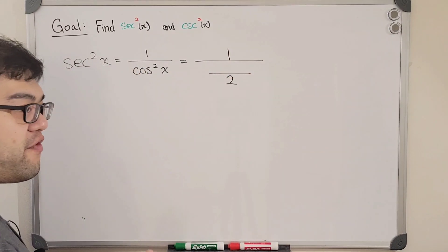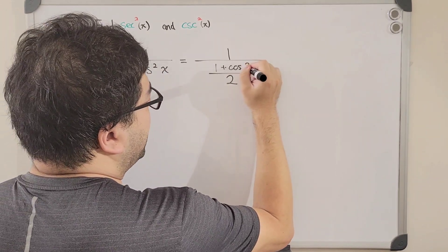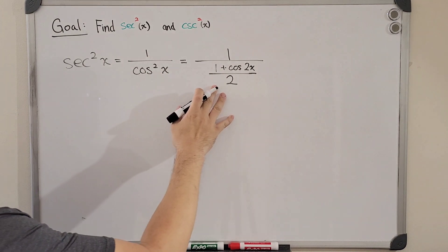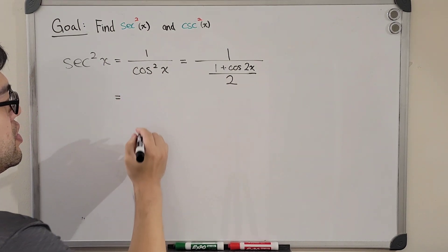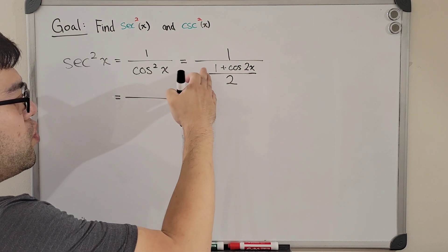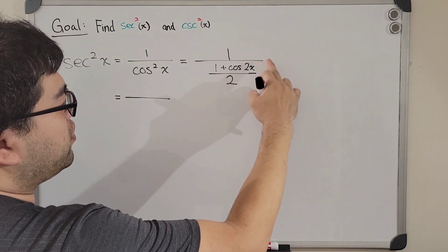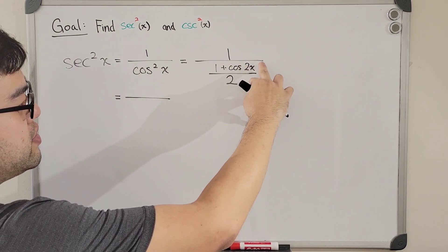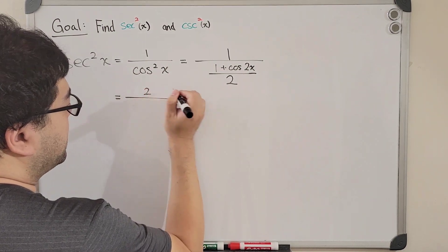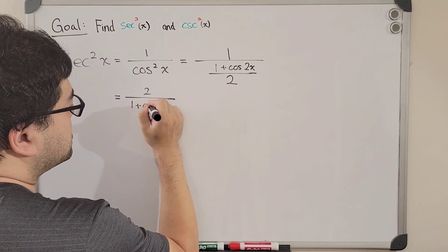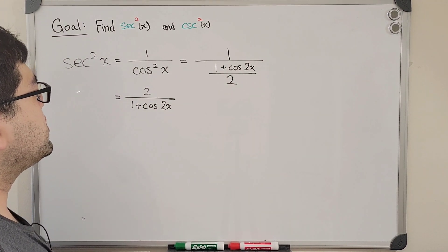For cosine squared of x we use the half-angle formula: it equals (1 + cos(2x)) / 2. So we now have 1 over that quantity, which is a complex fraction. To simplify, we flip the denominator fraction — dividing by a fraction means multiplying by its reciprocal — and we get 2 over (1 + cos(2x)).